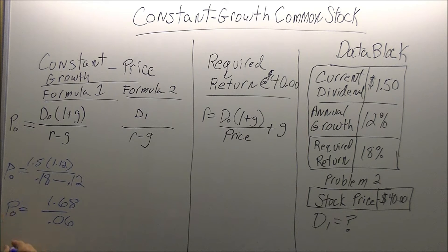The final step is we divide. 1.68 divided by 0.06 is going to give us $28. This is our formula and the price is $28.